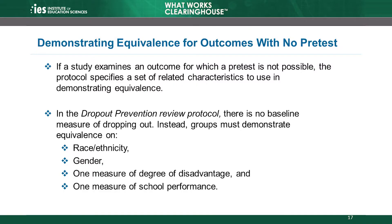For example, studies of dropout prevention have no baseline measure of dropping out. Instead, the dropout prevention review protocol requires studies to show equivalence in several other areas: race or ethnicity, gender, one measure of disadvantage such as the percentage receiving free or reduced-price lunch, and one measure of school performance such as achievement or attendance.